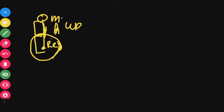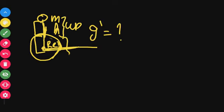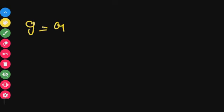Now let's look at the formulas. This is the acceleration due to gravity. The acceleration due to gravity is g. As told, the original acceleration due to gravity g is equal to GM divided by the radius of the Earth squared: g = GM / Re².